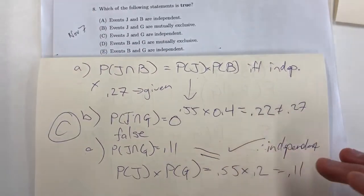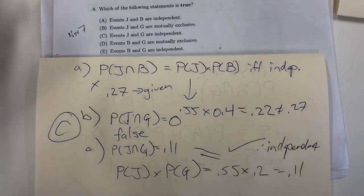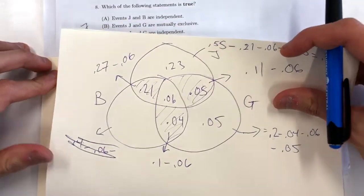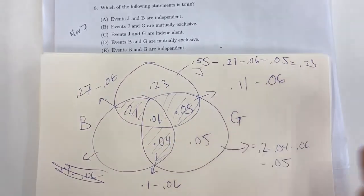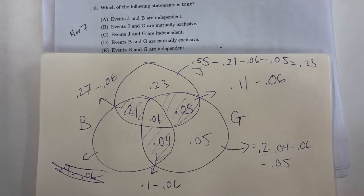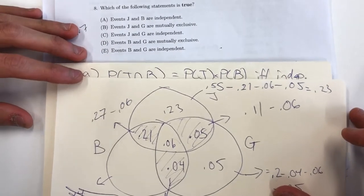If we looked at letter choice D, you can see they're not mutually exclusive. Between B and G, we see that the probability that they're both a Bomber and a Gold Eye fan is 10%, not 0%. So D is false.